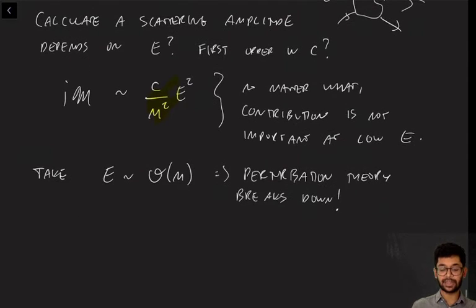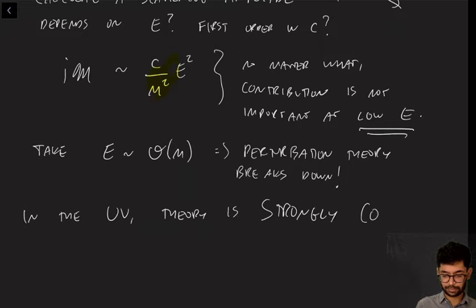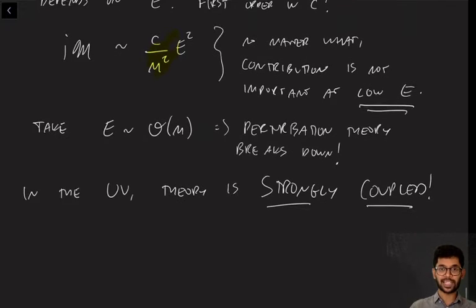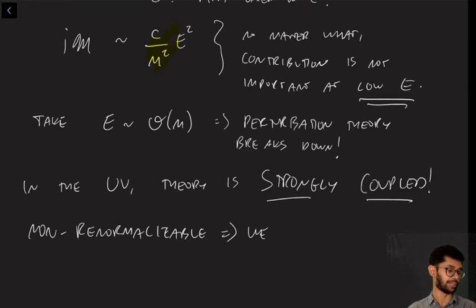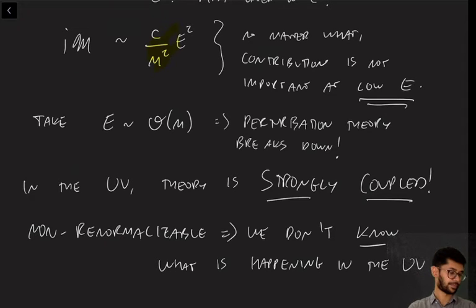And what is happening then is that this theory is fine at low energies, but at high energies in the UV, this theory is becoming strongly coupled. And you see, this is what perturbation theory, this is what non-renormalizability means in perturbation theory. Non-renormalizability tells us that we don't know something that is happening in the UV. That's what non-renormalizable means. And that is why we can't take the cutoff to infinity and retain predictive power. So we don't know what is happening in the UV.